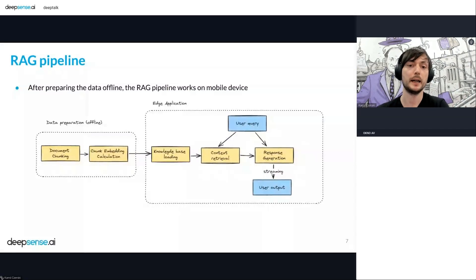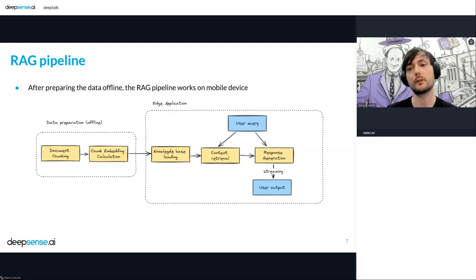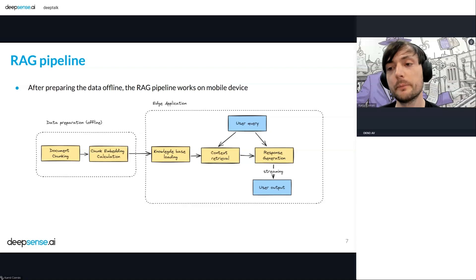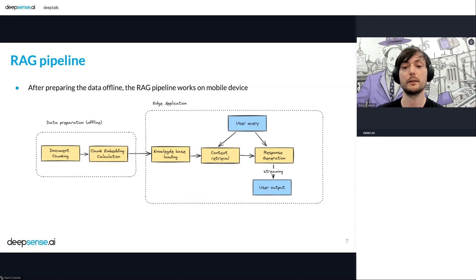The RAG pipeline we implemented is divided into two parts. One happens offline, outside of the device — this involves chunking documents into smaller pieces and calculating an embedding for each piece, building a database of chunked documents. The on-device application starts by loading this database into memory. Then we have a user query. We retrieve context from the database using the embeddings, and then this textual context plus the user query goes into the LLM. This response generation is the heart of the solution and generates a final answer.